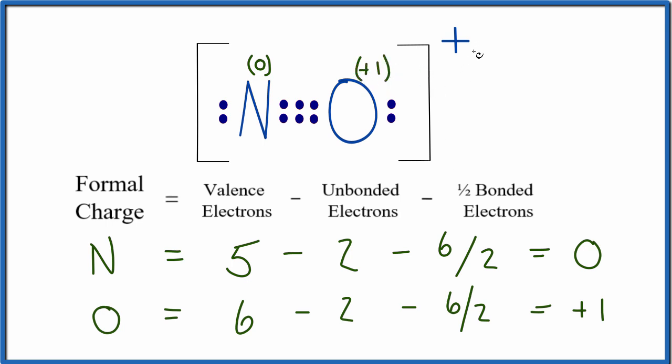And that makes sense because overall, for the entire molecule, we have this positive charge. It's a positive ion. And so what this shows us, what this formal charge shows us, is this positive charge we write outside here on the ion really resides on the oxygen. This is Dr. B with the formal charges for the atoms in NO+, and thanks for watching.